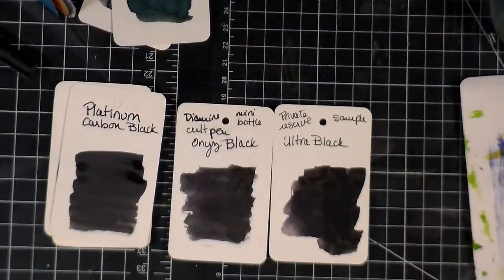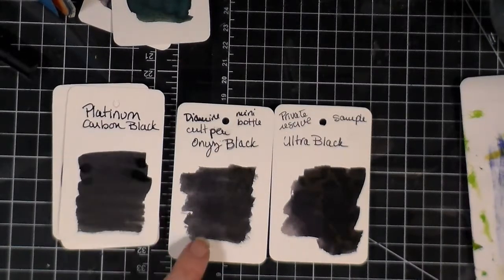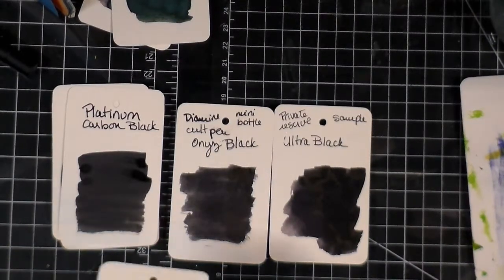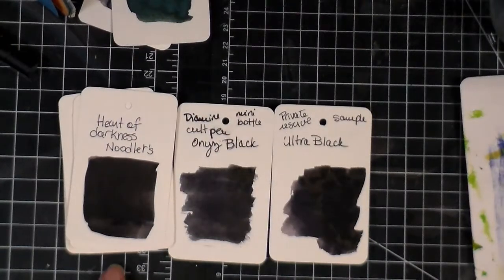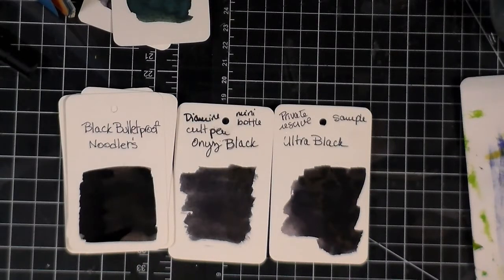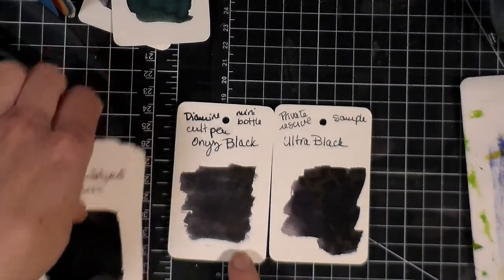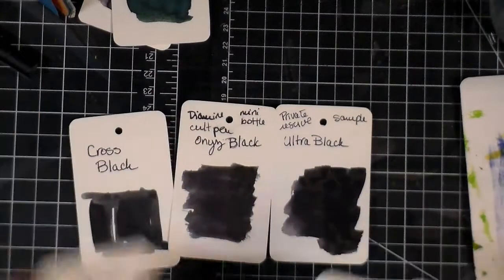This is Pelikan Black. Then Platinum Carbon Black which is much more black. This really feels like there's a lot of brown in there. Then this is the Heart of Darkness from Noodler's. And finally, the Bulletproof Black from Noodler's.